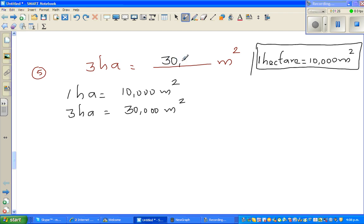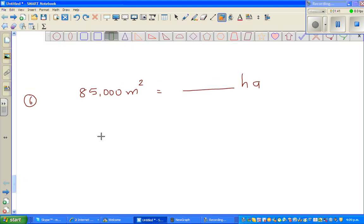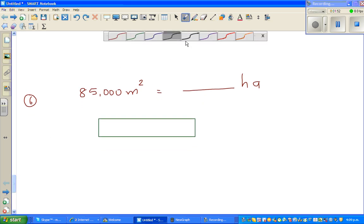Now the next is from 85,000 meters squared, I want to change into hectares. You can do the other way around, you can divide, but I don't like to remember formulas. Let us do both ways. First, let us use the formula.